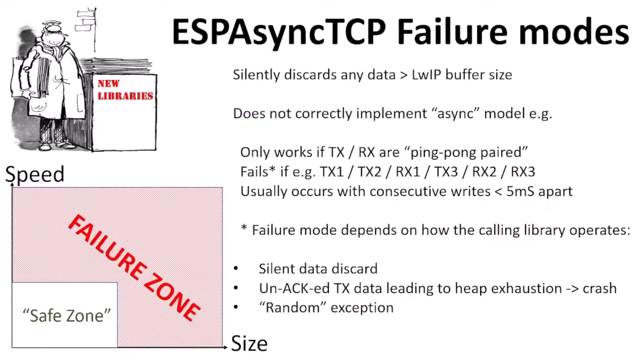Let's look at ESP-async-tcp. It serves as the basis for many other libraries that sit on top of it, so any library that calls ESP-async-tcp will, by inheritance, exhibit any or all of these problems. The first problem is that if you send a data packet larger than the buffer size, it will just be silently discarded — you get no warning, no explanation, and data just disappears.